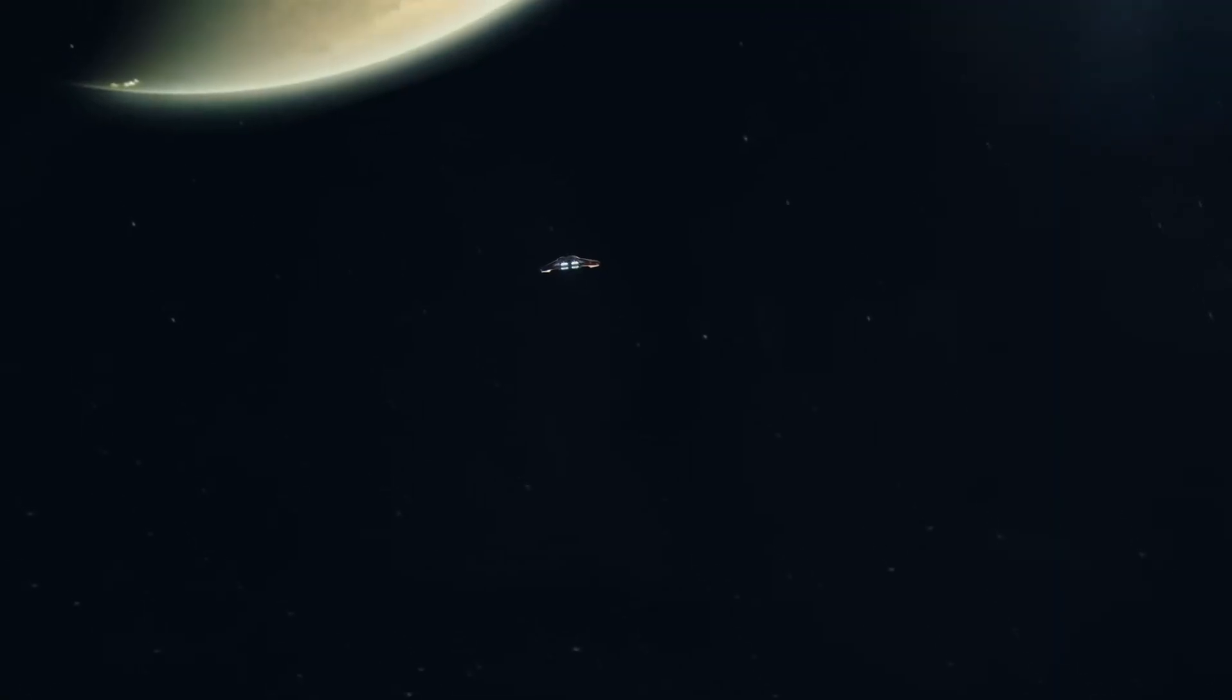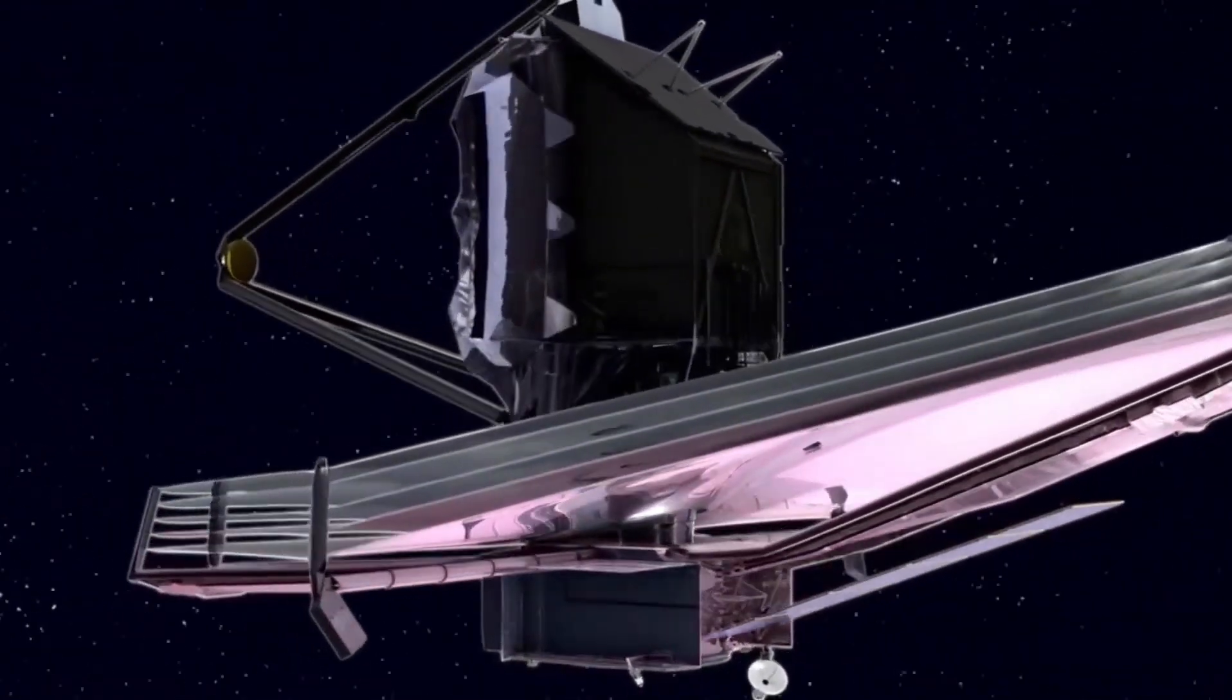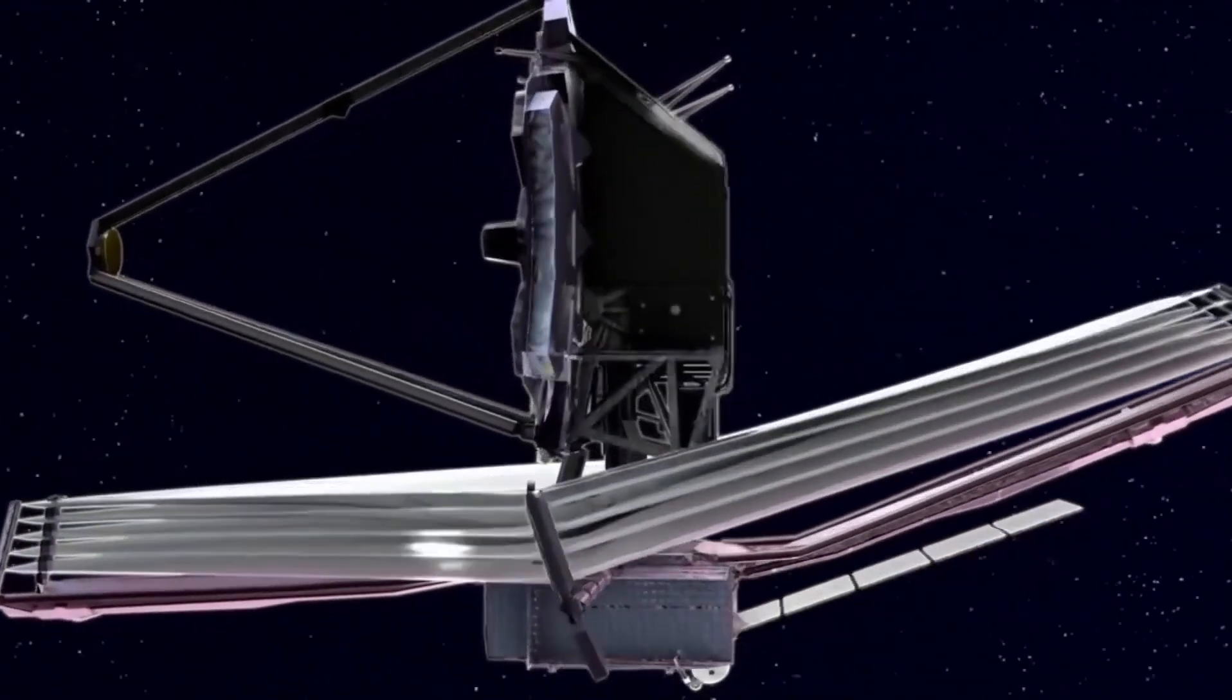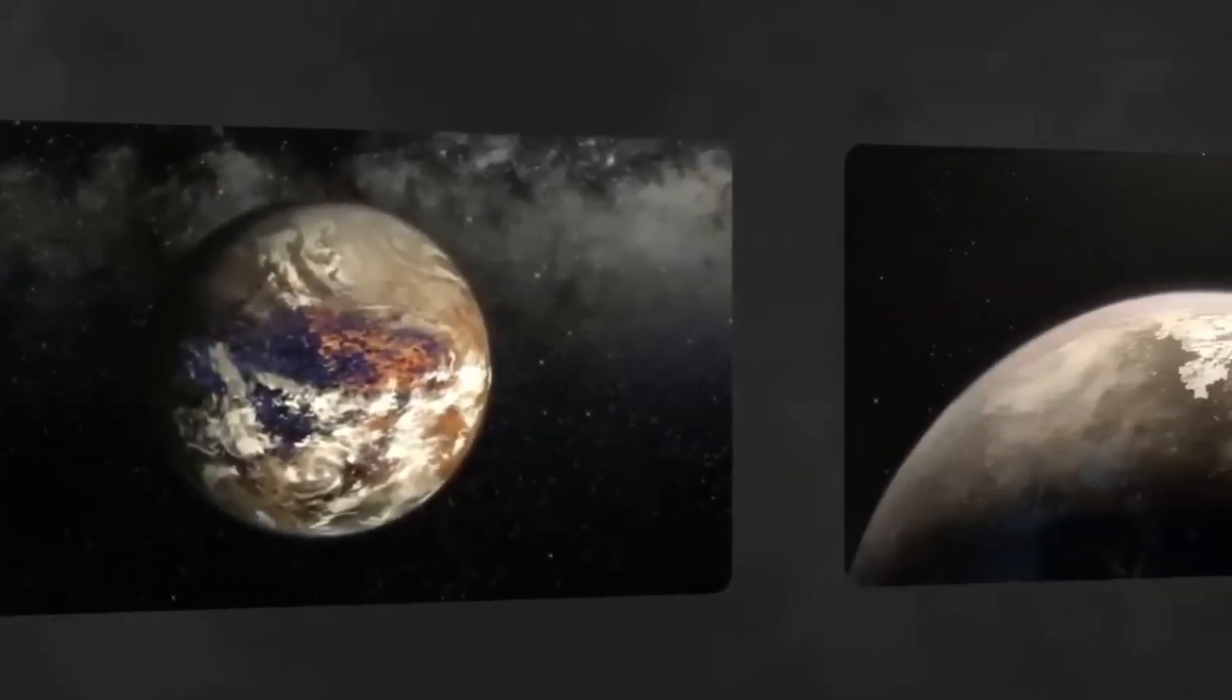One of Webb's biggest advantages is the type of light it collects. While the human eye can only see visible light, Webb primarily functions as an infrared telescope, allowing it to see light in longer wavelengths than what our eyes can perceive.